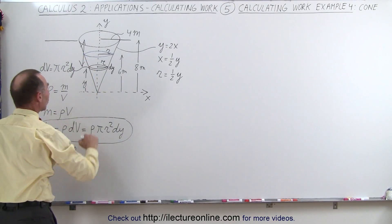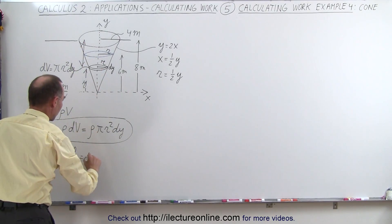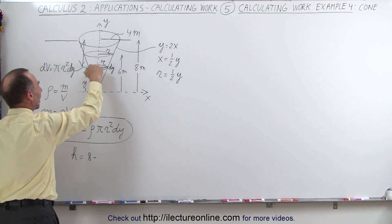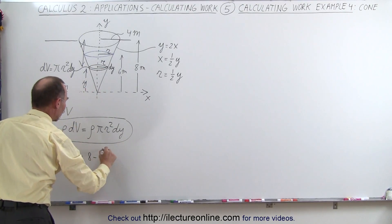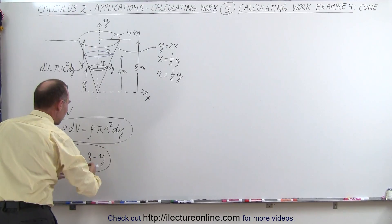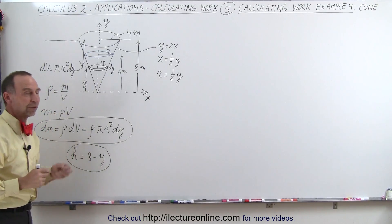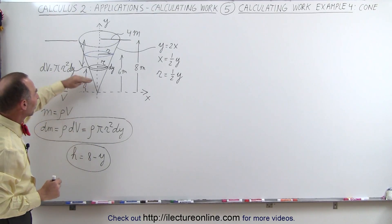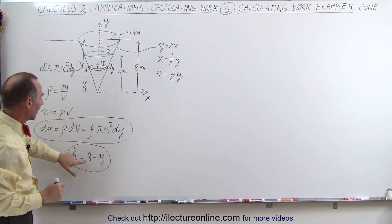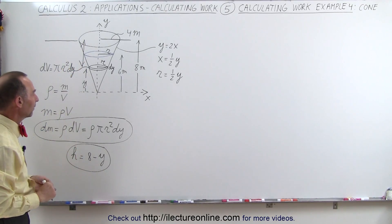H can then be defined as being the total height 8 minus the distance, the height that the water already is at. So this will be the amount of height that we have to lift the water through for every little slice. As you get up higher, y becomes bigger, 8 minus y becomes a smaller amount. So that seems to work out.